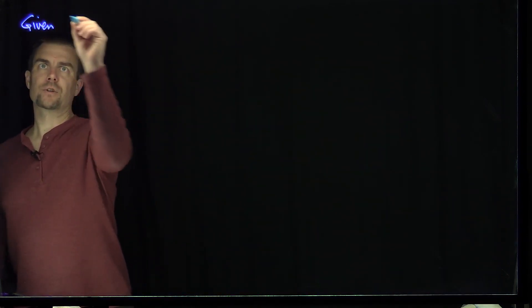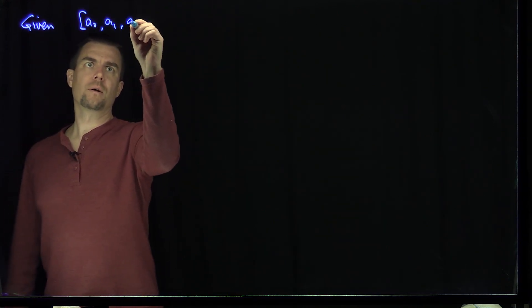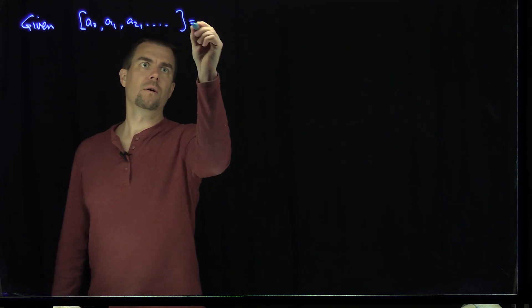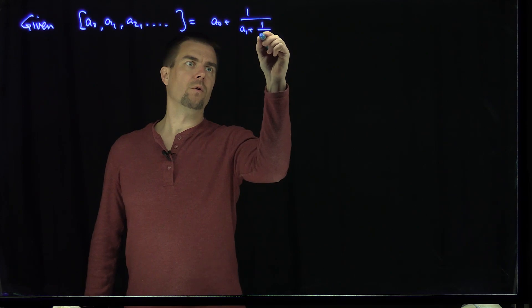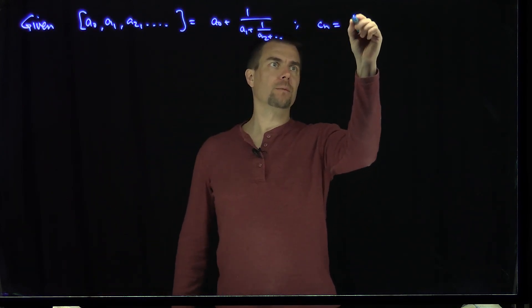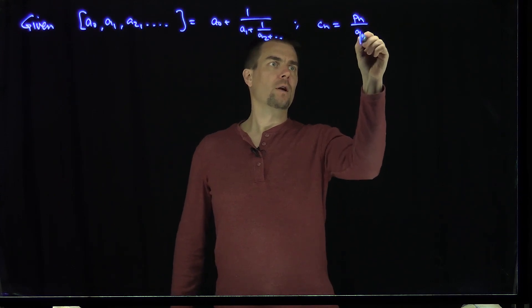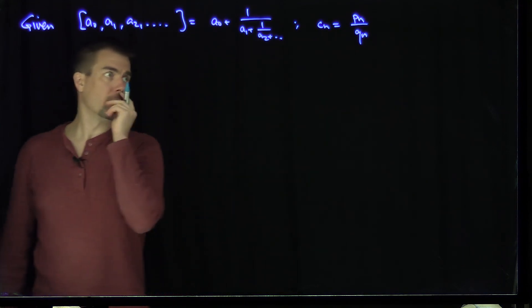Hello, students. In this video, we'll prove that the convergents of an infinite continued fraction converge to a real number. If we're given an infinite continued fraction a0, a1, a2, forever — which is a0 plus 1 over a1 plus 1 over a2, and so on — we let cn be the convergent pn over qn, and we know the recursion relationship these satisfy. I need a few lemmas first to get what we want.